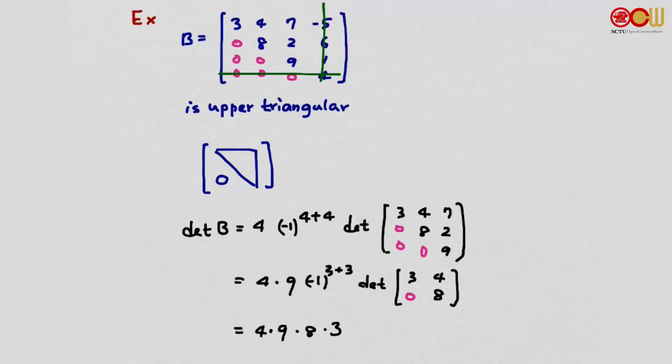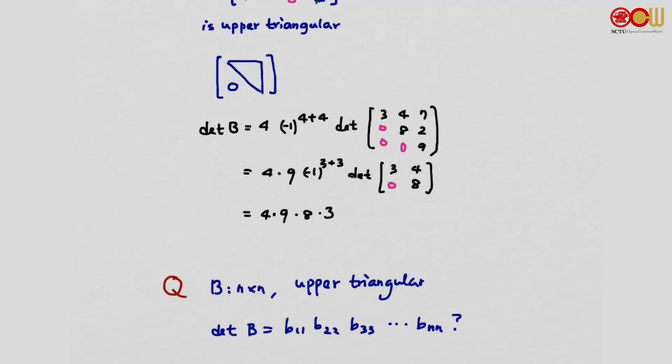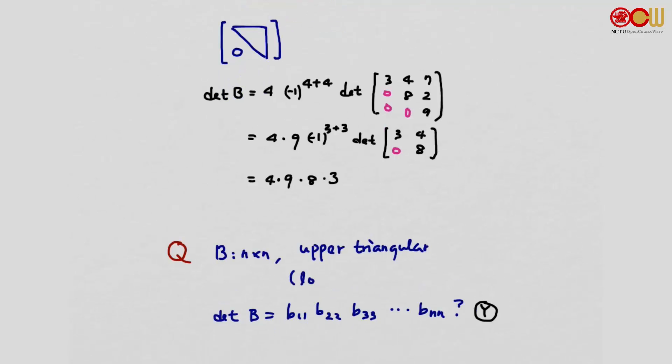The determinant will be the product 4, 9, 8, 3. What is the product 4, 9, 8, 3? It's exactly the product of the diagonal elements. Now a question: Is this true for an n-by-n matrix in general? Suppose we are given an n-by-n matrix B that is upper triangular. Is it always true that the determinant of B is the product of the diagonal elements? It's always true, because we can always do cofactor expansion along the last row and pull out the last diagonal element. Eventually, we will get the product of the diagonal elements. How about the lower triangular case? We can verify it's also true for lower triangular matrices.